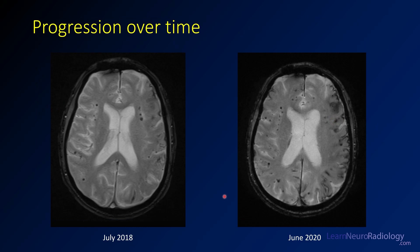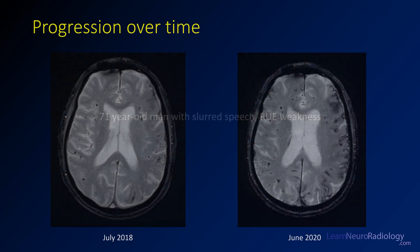Here you see this patient's progression over time. In July of 2018, there were scattered hemorrhages, mostly peripheral. Within two years, the number of peripheral hemorrhages had more than doubled, and the amount of superficial siderosis over the left hemisphere had increased pretty drastically as well.